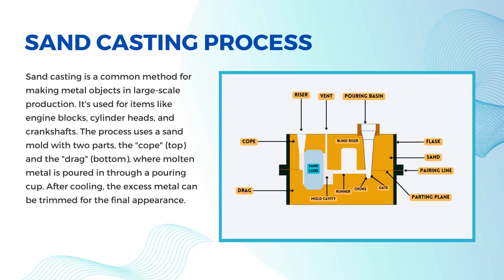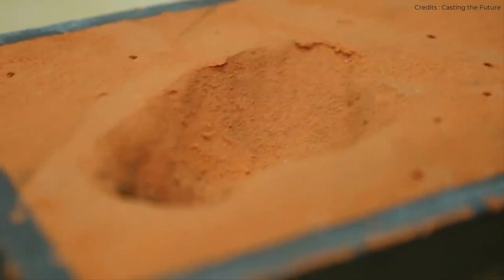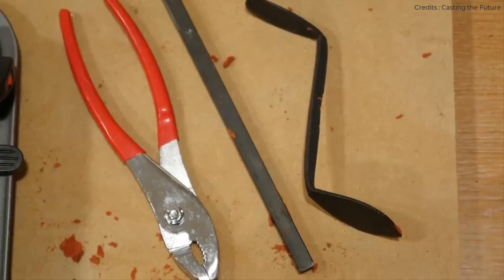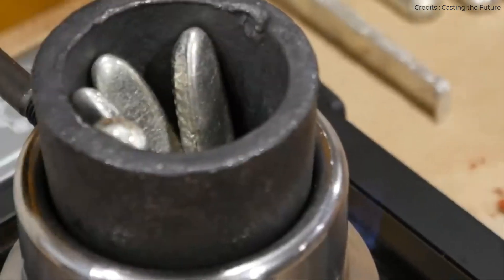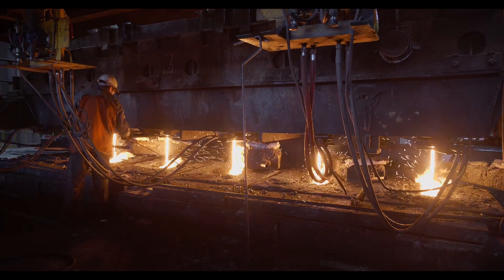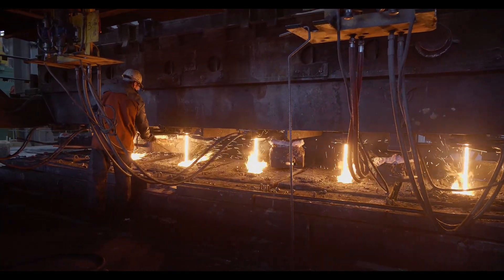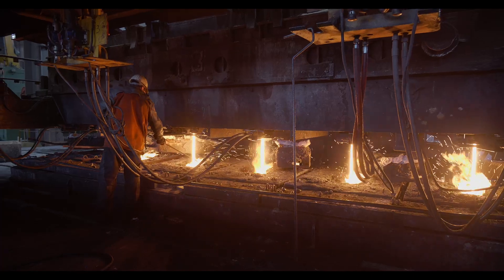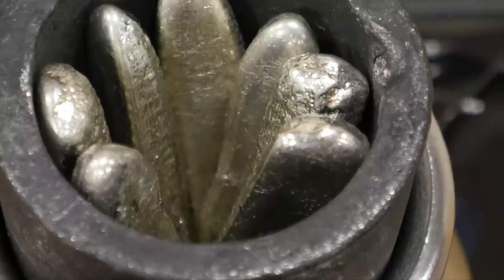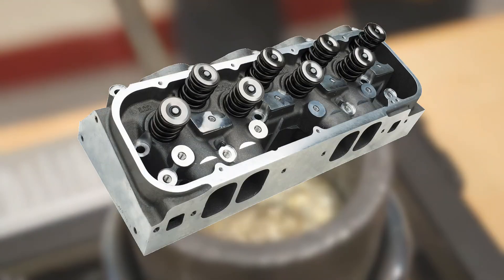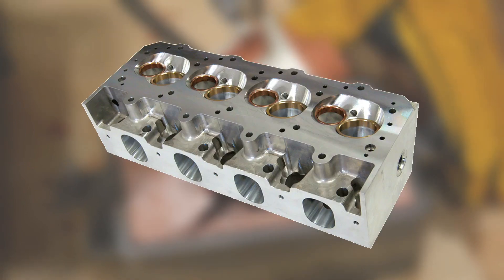Starting with the first main type of casting, which is sand casting. It is a method used for producing metal objects, and this technique is widely utilized in large-scale factories. It is especially used for manufacturing a range of items such as engine blocks, cylinder heads, and crankshafts.